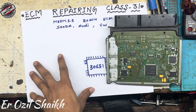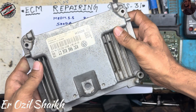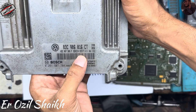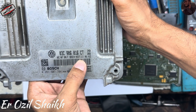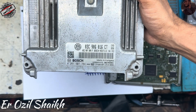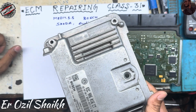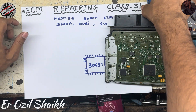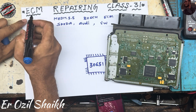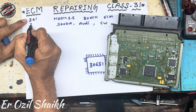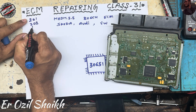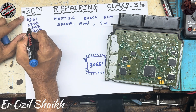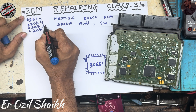Hello everyone, this is Mozil, welcome back to my channel. Today we have an issue — the hardware number is MAD 17.5.5. In this ECU there is an injectors issue; the fault codes are 201, 202, 203, 204 — all are open circuit.